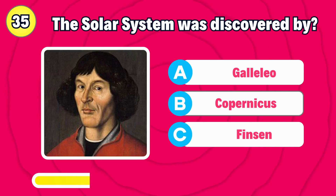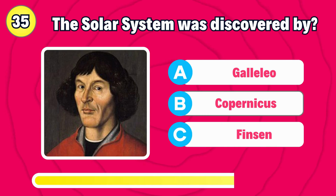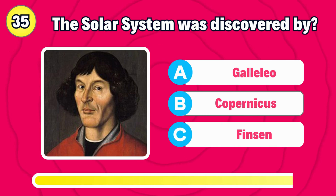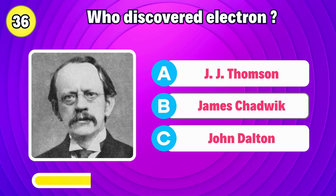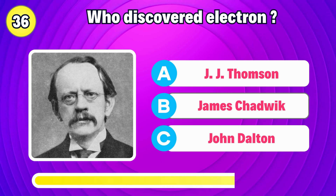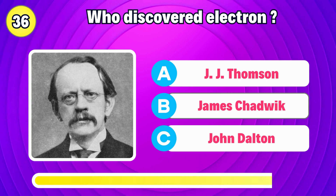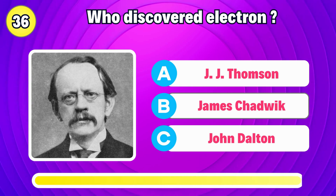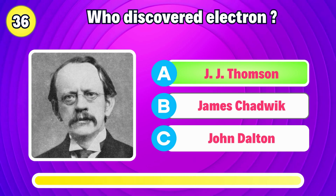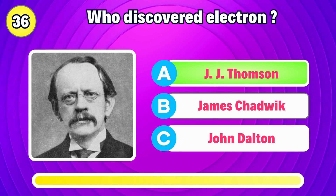The solar system was discovered by? Correct, it's Copernicus. Who discovered the electron? Correct, it's J.J. Thomson.